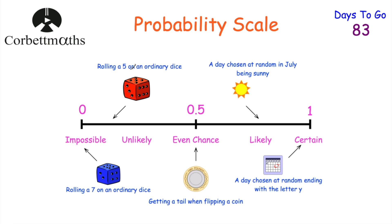Let's start off by looking at the probability scale. At one end we've got zero, which is impossible — something that cannot happen. At the other end we've got one, which is something that is certain to happen. In the middle we've got 0.5, that's an even chance — for instance when you flip a coin, the chance of getting a tail. Anything to the left of 0.5 is unlikely; the closer it is to zero, the less likely it is. Anything to the right of 0.5 is something that's likely to happen, and the closer to one, the more likely it is.